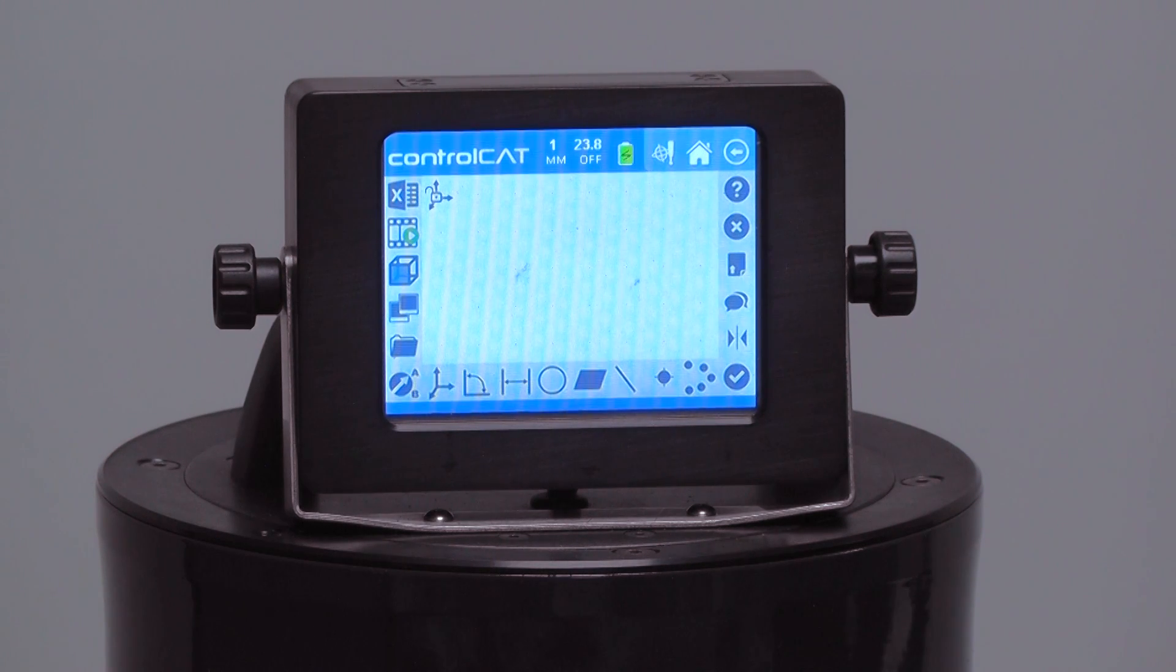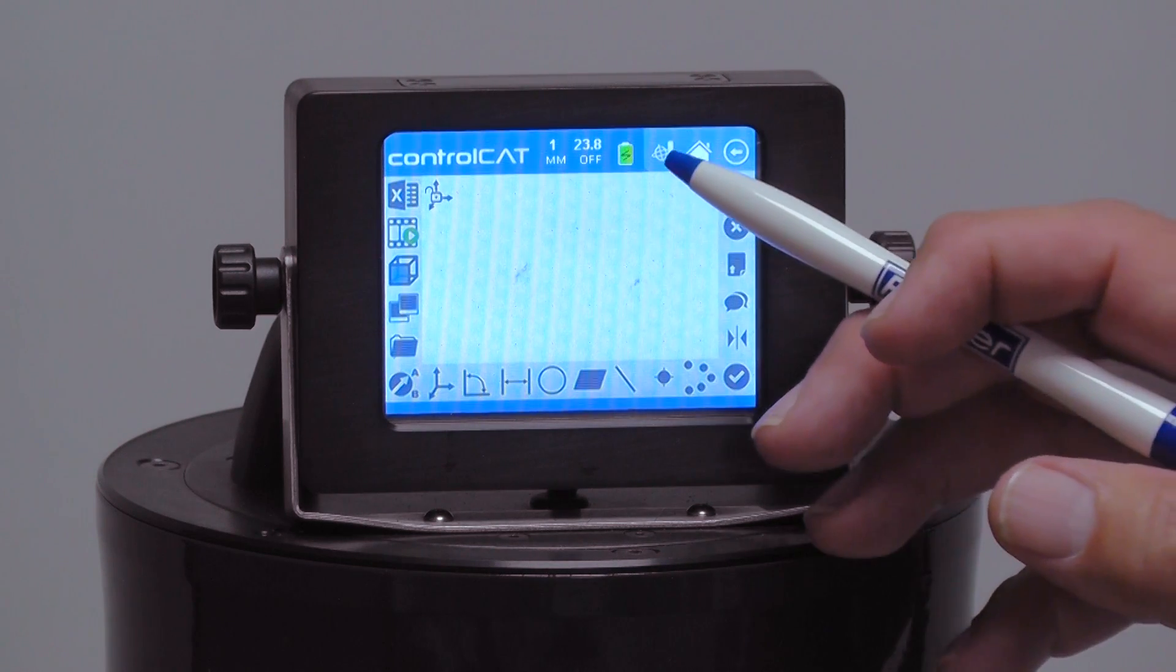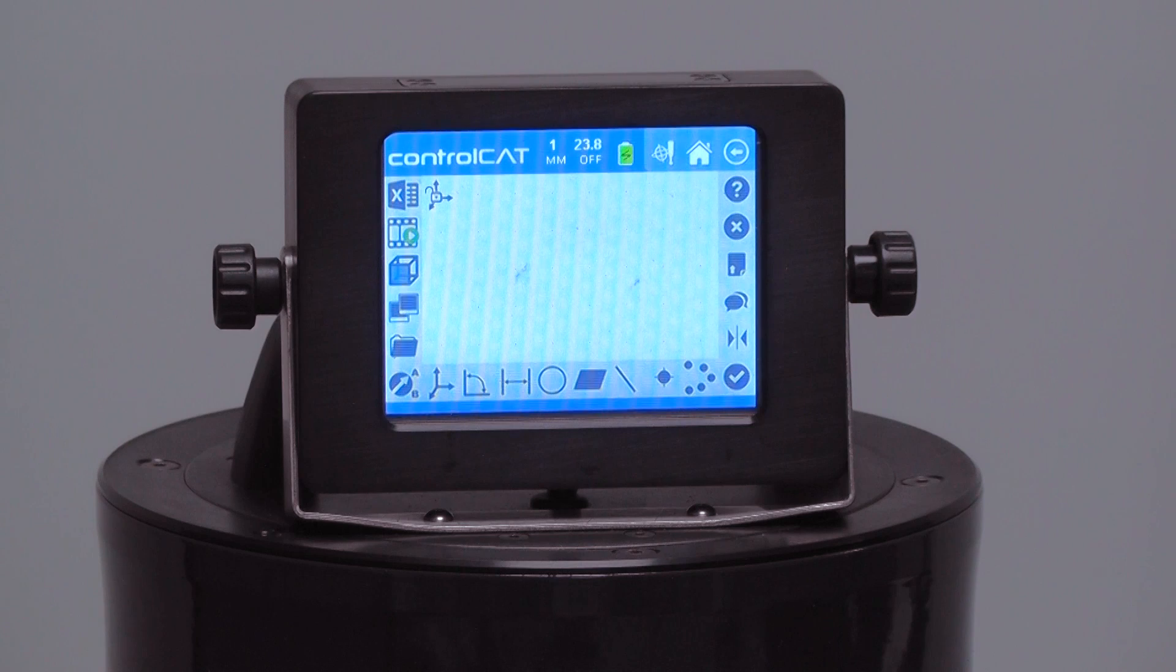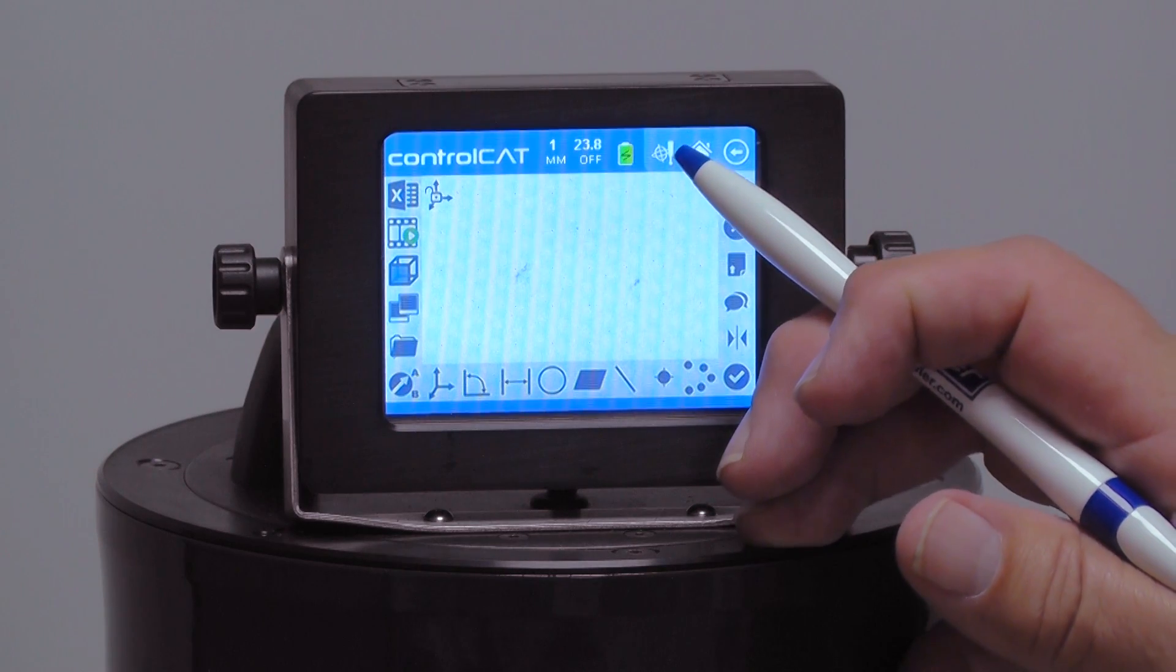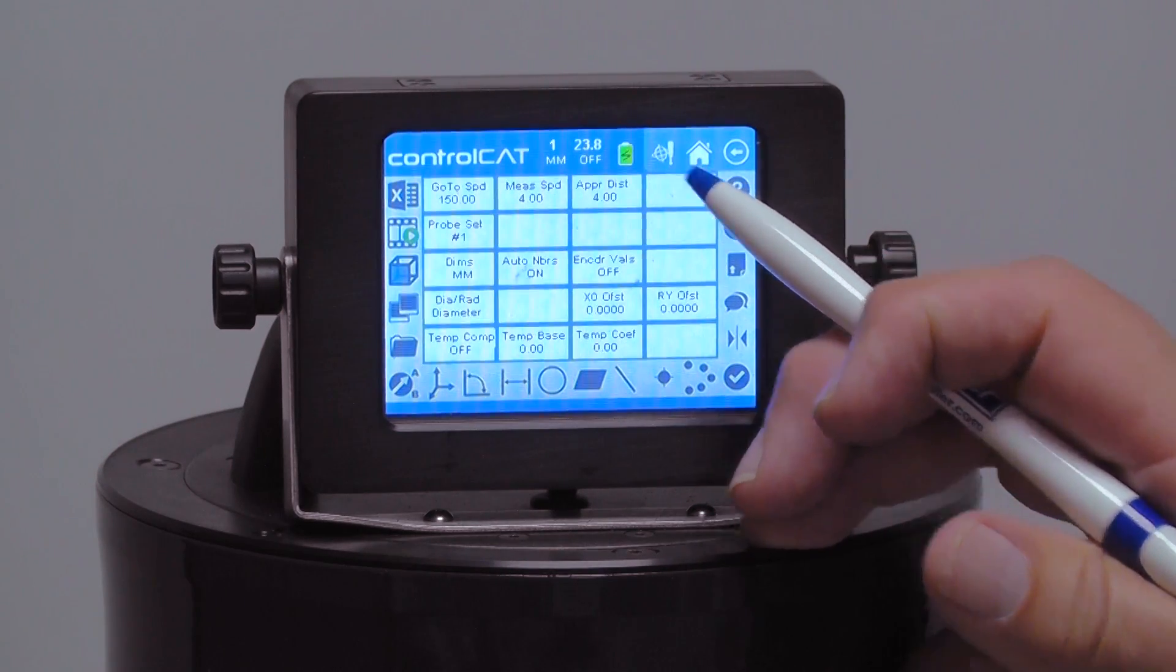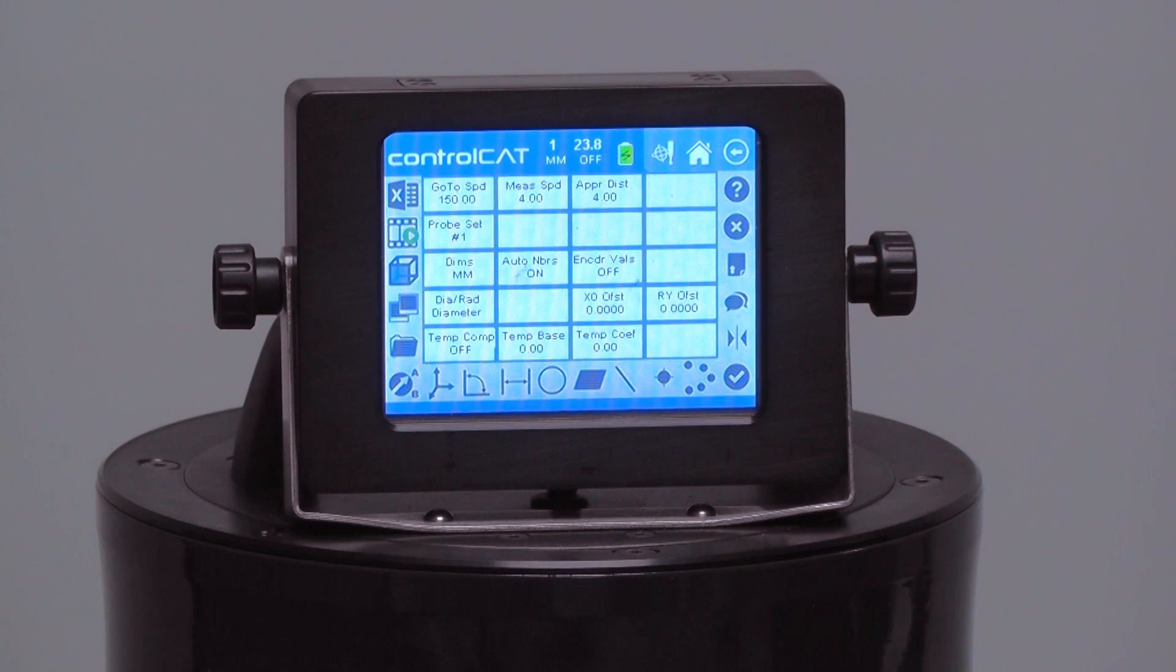And 'off' means temperature compensation is turned off. The little battery symbol here tells me how much battery charge we have. If it's full green, it means we've got a full battery charge. The next symbol over, which looks like a gyroscope and a probe, if I touch that, it brings up a sub menu which is pretty important in Control Cat.